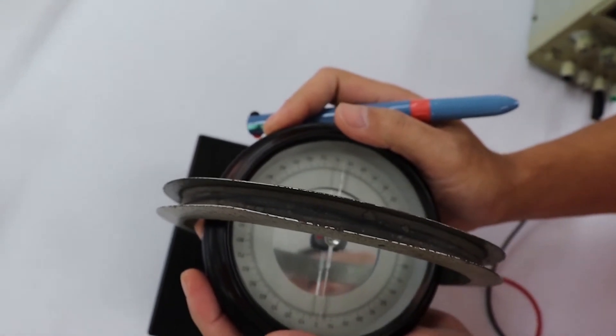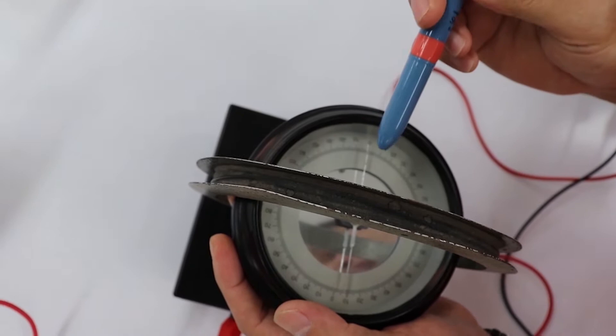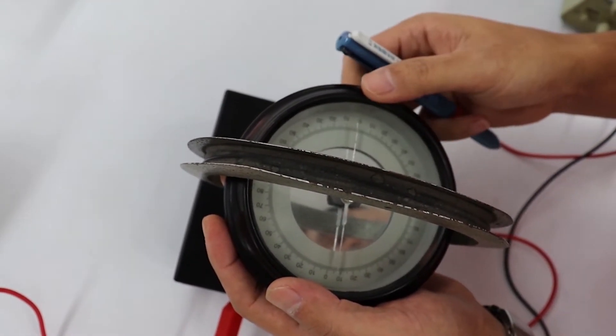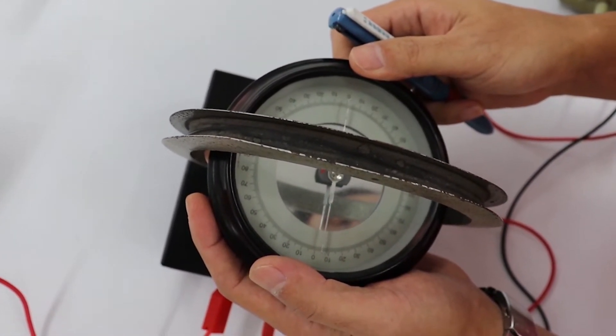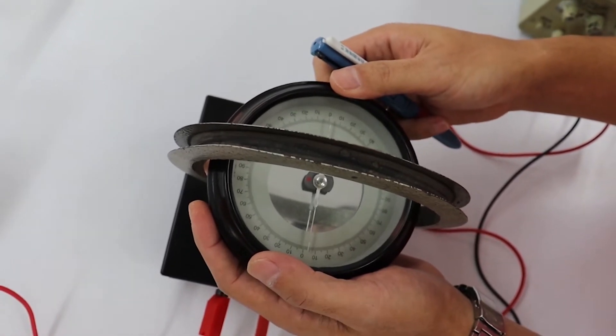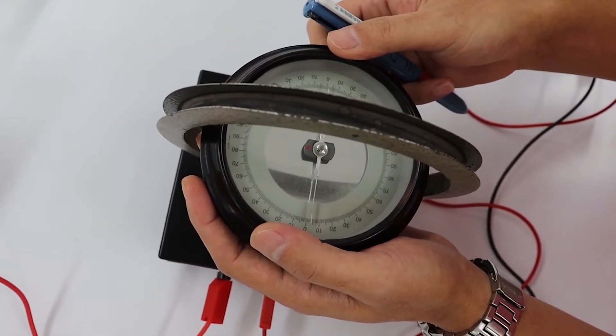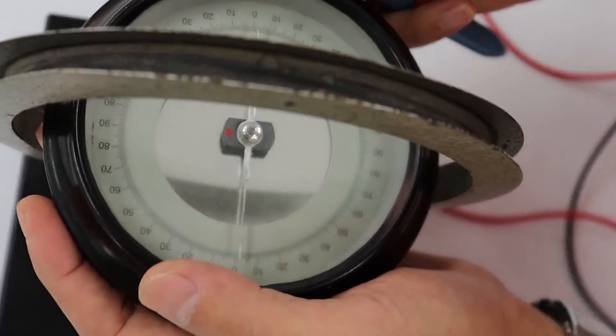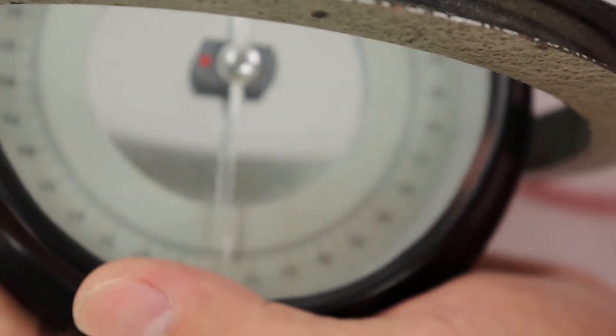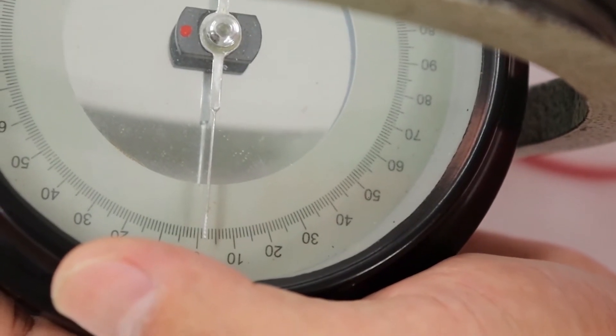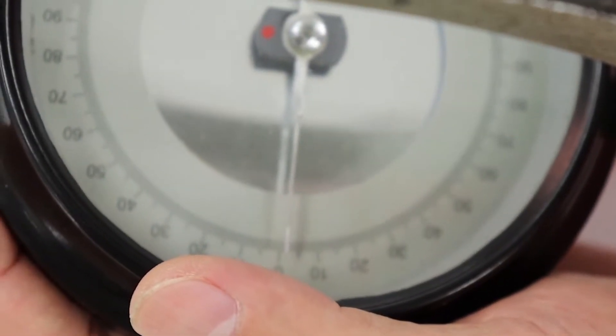After that, rotate the compass until the pointer points at an angle of zero degrees. At this time, we do not apply any source to the tangent galvanometer.